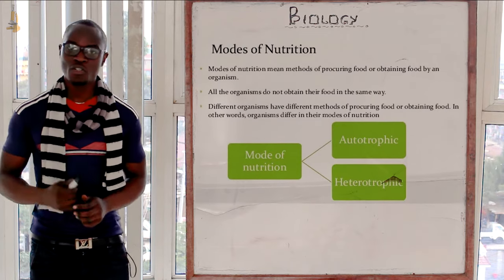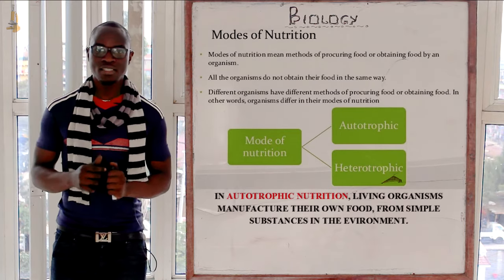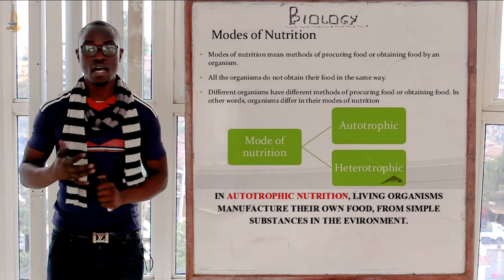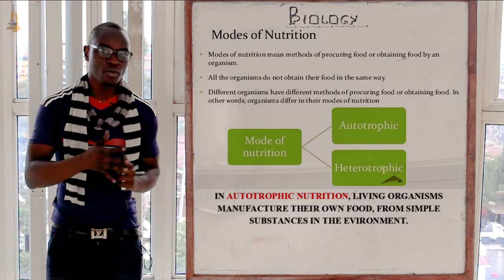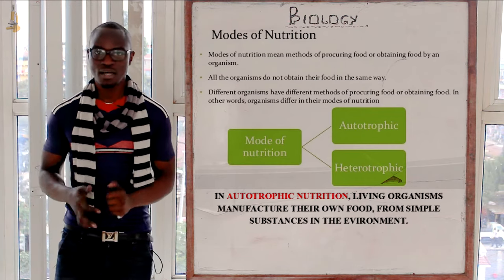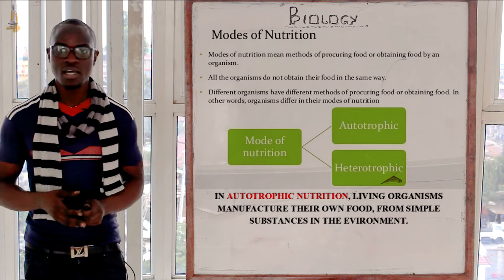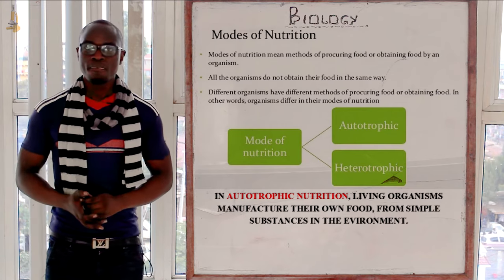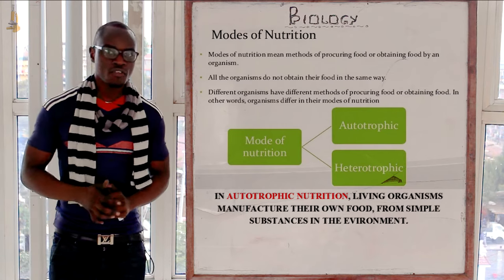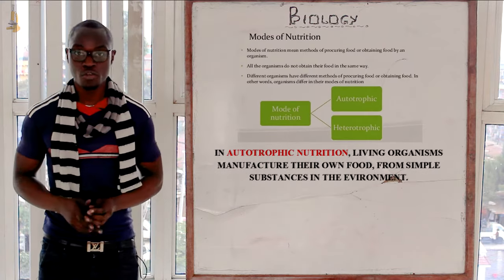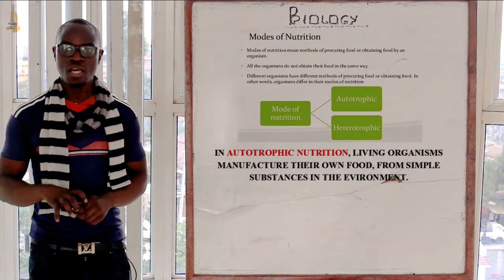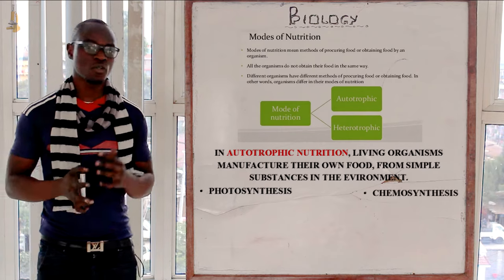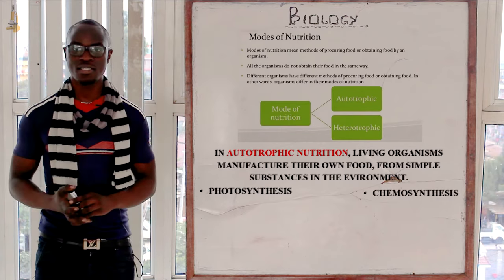Autotrophic nutrition is whereby living organisms manufacture their own complex food from simple substances — for example, carbon dioxide, water, and light or chemicals. In autotrophic nutrition, we have two types: photosynthesis and chemosynthesis.